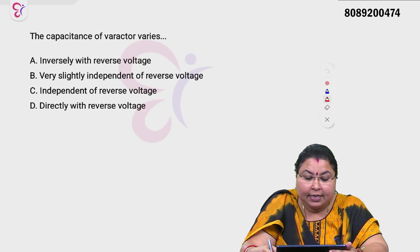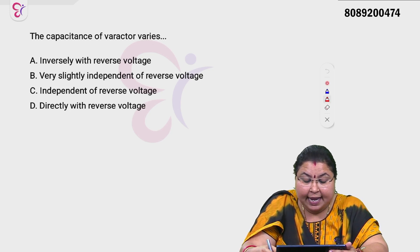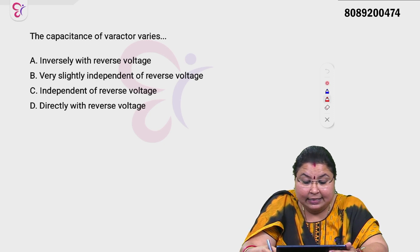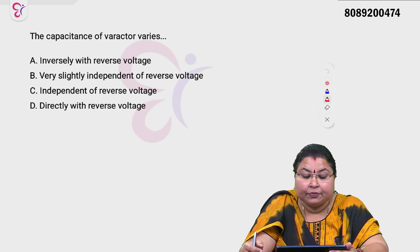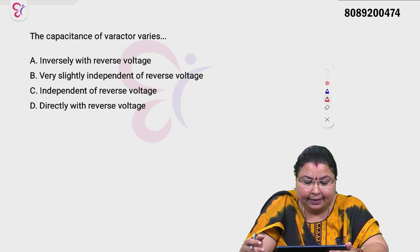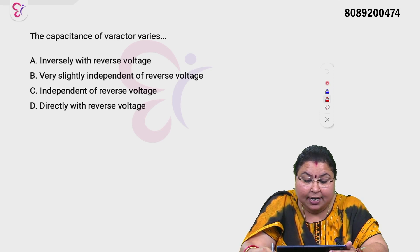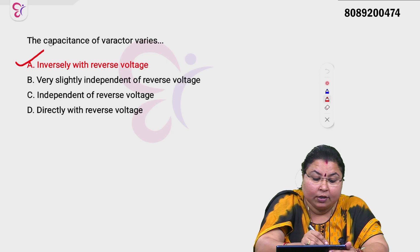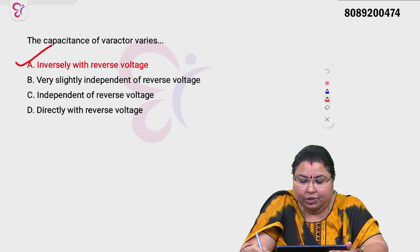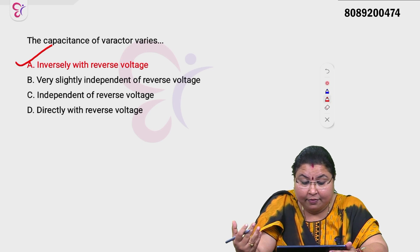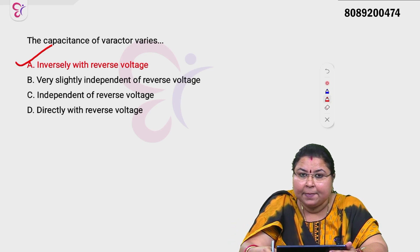The capacitance of a varactor varies: Option A inversely with the reverse voltage, Option B very slightly independent of reverse voltage, Option C independent of reverse voltage, Option D directly with the reverse voltage. The capacitance of a varactor diode varies inversely with the reverse voltage — Option A is the correct answer.